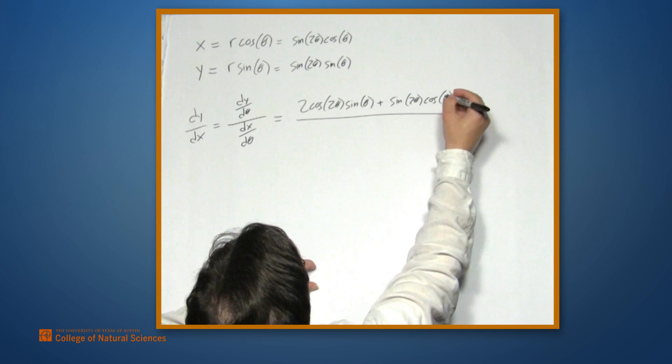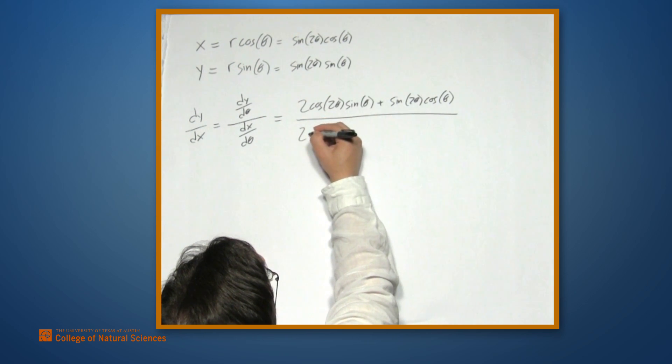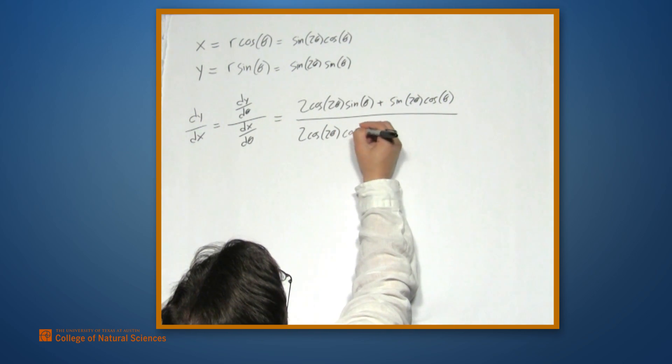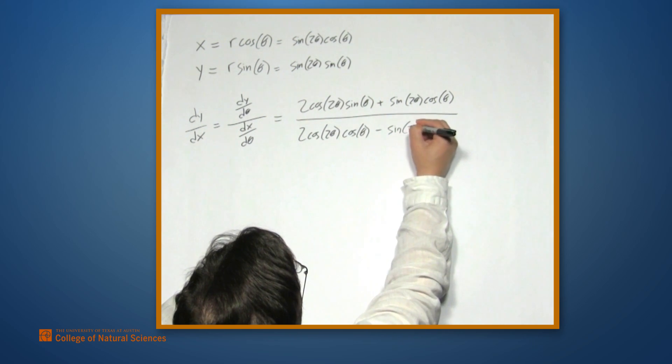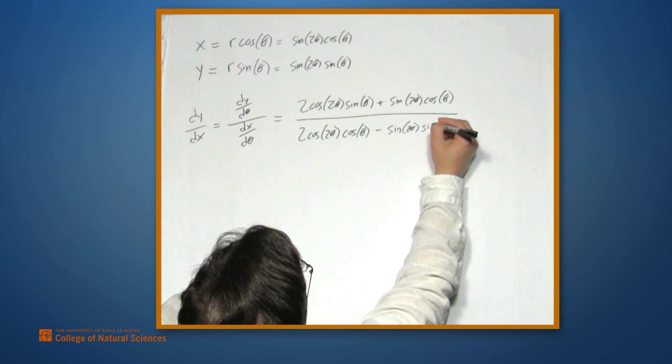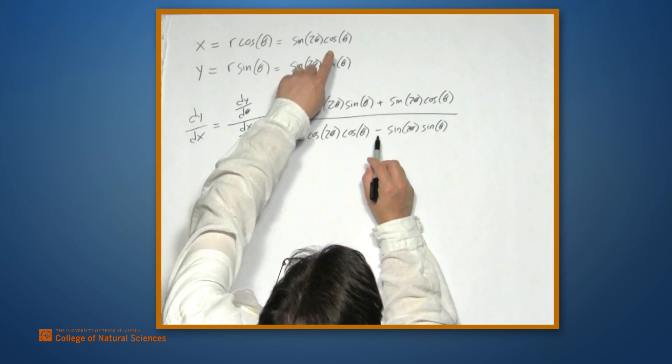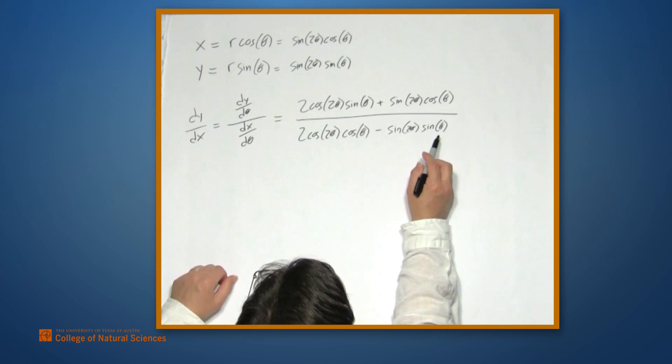And then we divide by the derivative of x with respect to theta, which is 2 cosine 2 theta cosine theta minus sine 2 theta sine of theta. This minus comes from differentiating this cosine. We get negative sine, so we just pull that out front.